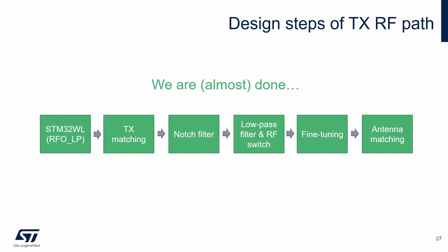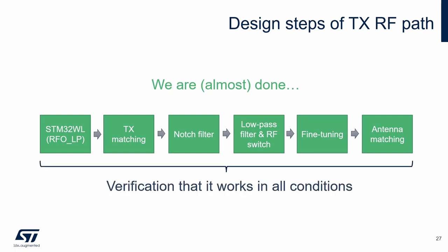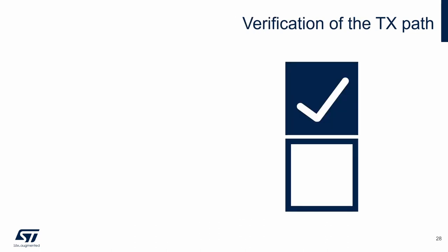Now we are almost at the end. The last important step is verification that the designed transmitter path works as expected in all working conditions. If something is not good, it must be improved. Finding a good design is an iterative process, but with knowledge of each building block it should be easier — you should know what to focus on. Here are some points which are good to check.